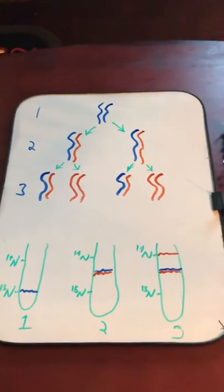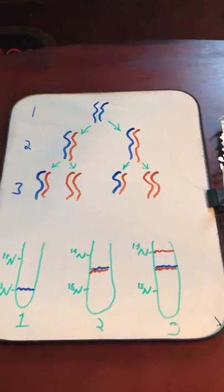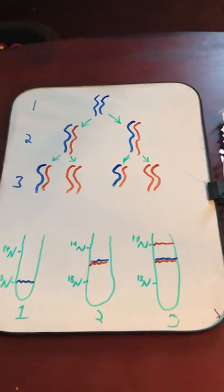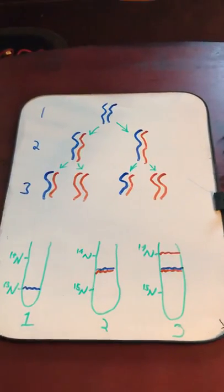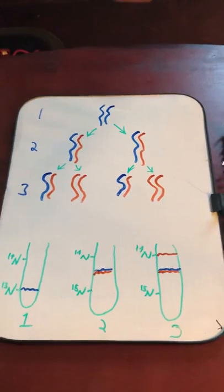In 1958, Meselson and Stahl proved that the semi-conservative model of DNA replication was the correct model. I represented the DNA as two strands rather than a double helix for simplicity.